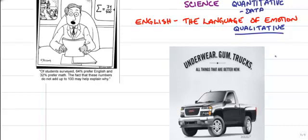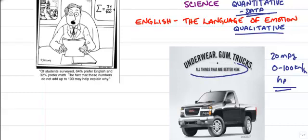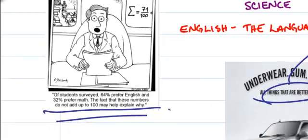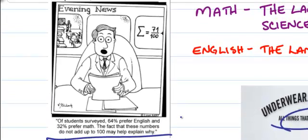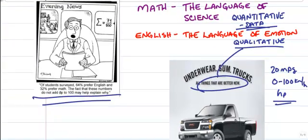Car ads would also have quantitative data. This truck has excellent mileage. It has 20 miles per gallon. It goes from 0 to 100 kilometers per hour in so many seconds. It's got so many horsepower. Those are all quantitative data that are presented to you in a car ad. You can see here a cartoon on the left-hand side. The newscaster is saying 64% of people prefer English and 32% of students prefer math. They don't add up and that may explain why. People don't realize that you need 100% of people there.